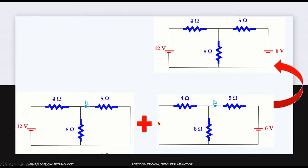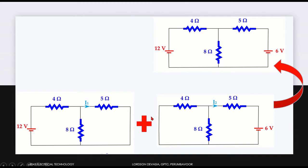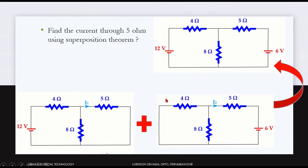If the internal resistance is not provided, then the current source will be replaced by an open circuit. The question is: find the current through the 5 ohm using the Superposition Theorem.